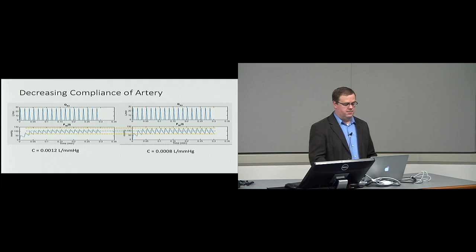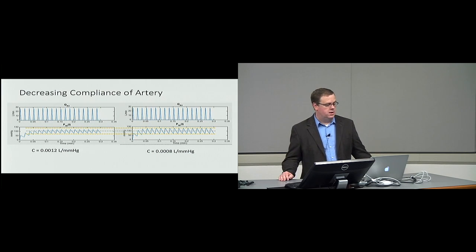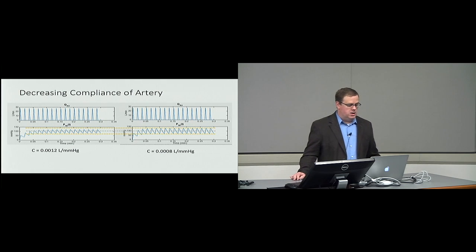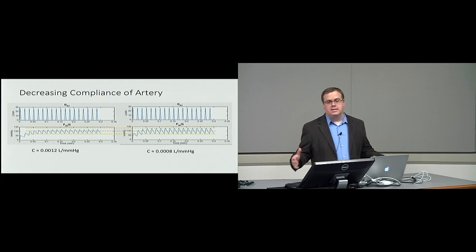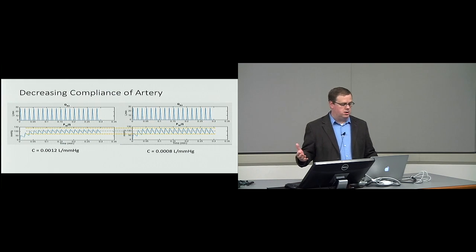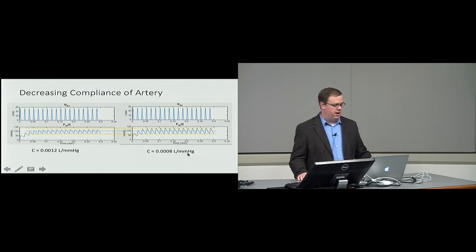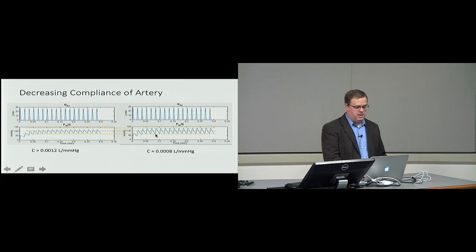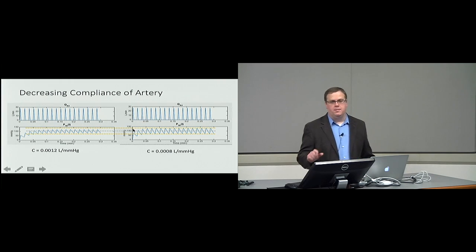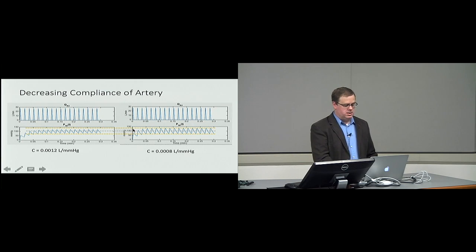One example is looking at decreasing compliance of the systemic arteries as you get older. We run the simulation with our original compliance value, then drop the compliance — since compliance decreases as a function of age. We can see that the pulse pressure has increased, and the mean pressure is slightly higher than before, but the pulse pressure is quite a bit larger. You can get a good feel for how that compliance change affects the pulse pressure waveform.